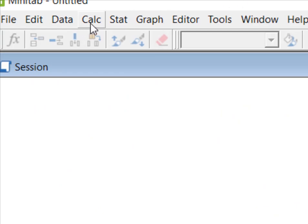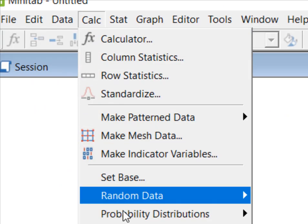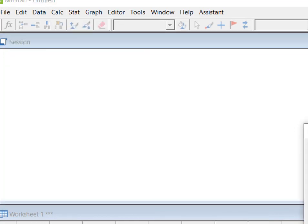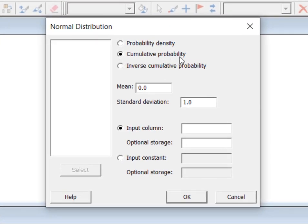So I'm over here in Minitab and I'm gonna go to calc down to probability distributions and I want normal distribution. Because I'm solving for an area under the curve I want the cumulative probability. We were given the population mean is 3.2 pounds. Remember for standard deviation here use your standard error of the mean of 0.10 and our input constant is that value of x-bar on the curve and that was 3.4 pounds. And now we're going to hit OK.